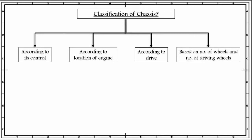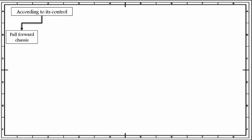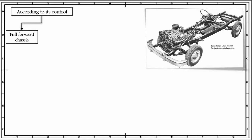The first classification of chassis is according to its control. According to its control, chassis can be classified as full forward chassis. In this type, engine is fitted in front of the driver seat or in the driver cabin. It is usually used in cars and all models of Tata trucks. Since the driver sits behind the engine, the driver cannot see the road just in front of the front wheel. Hence, a slope is provided at the mudguard and bonnet so that the driver can see close to the wheels as far as possible. Also, passengers or goods cannot be carried in the portion of the chassis where the engine is fitted. An example is shown in this figure — the engine part is fitted in front of the driver compartment and the driver is seated behind it.